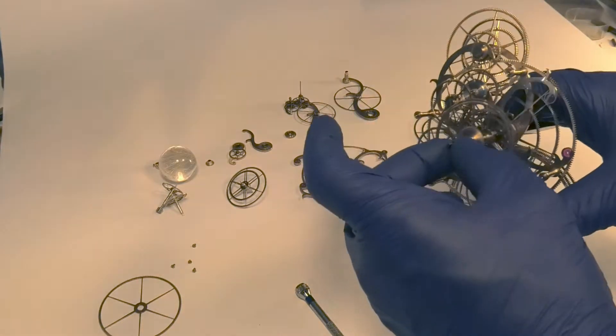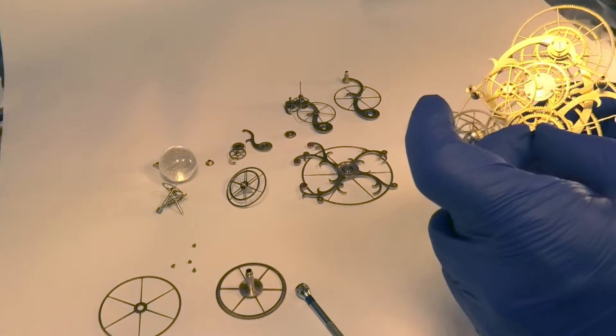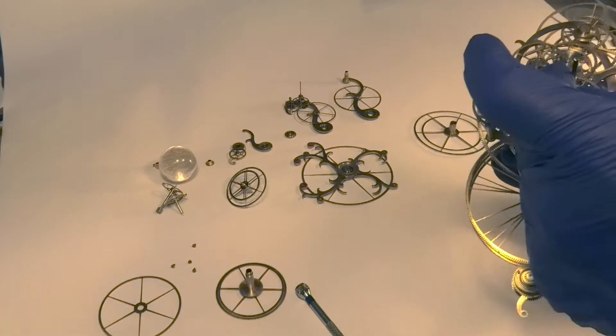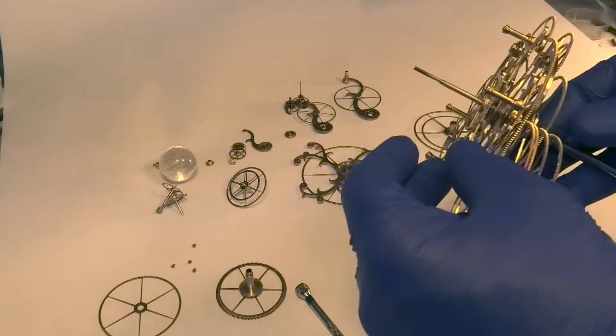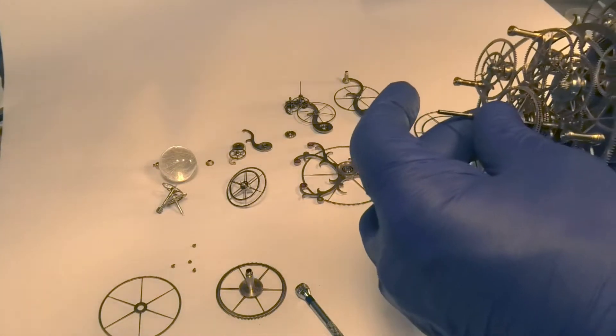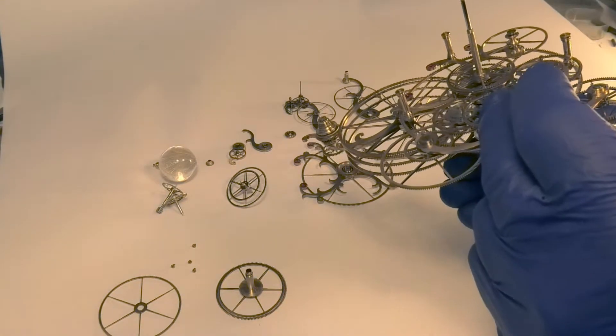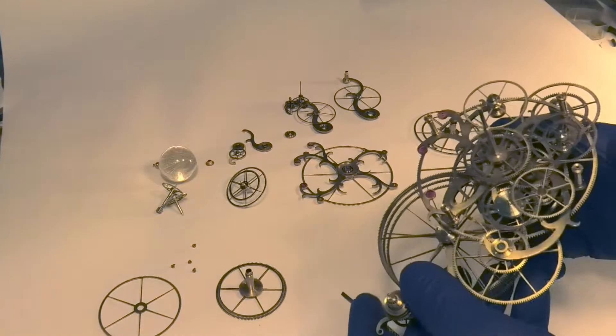Then we have another section to remove, then this unit here. The next center lever can't be removed because it has a lower wheel. There is a large end diameter in this wheel so we have to loosen this clamp screw.